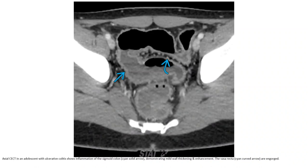Contrast CT enterography in an adolescent with inflammation of the sigmoid colon demonstrates thin, mild wall thickening and enhancement. The vasa recta are engorged.